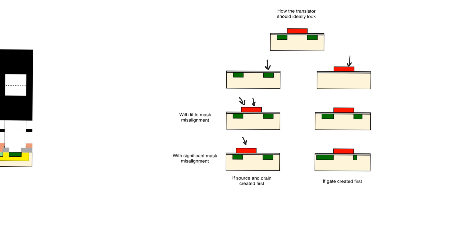On the other hand, if you create the polysilicon gate first and then implant the sources and drains — using the polysilicon gate as a barrier to prevent implantation of ions below the thin oxide — then even if there is a slight mismatch between the two masks, we will still create a transistor. All that would happen is that we might create a drain that is slightly wider and a source that is slightly shorter. In fact, even with a lot of mismatch we still have a transistor — it's not problem-free, it may have more resistance than planned in the source, but it is still a transistor.